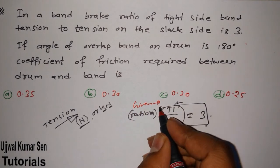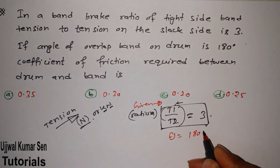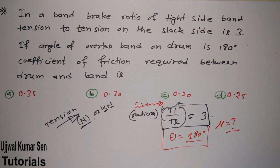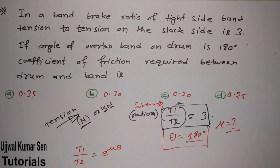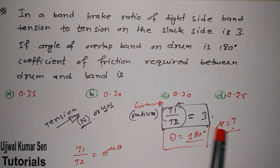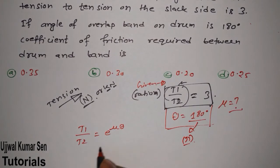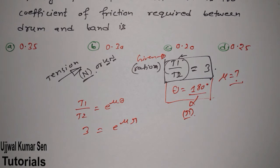If you are a beginner, write down the given data. The angle of overlap of the band on the drum is theta = 180 degrees. We need to find the coefficient of friction. For band brakes, the equation is T1/T2 = e to the power mu theta. Note that theta is given in degrees, so we must convert it to radians: 180 degrees equals pi radians. So we have: T1/T2 = e to the power mu pi = 3. Now apply log to both sides.